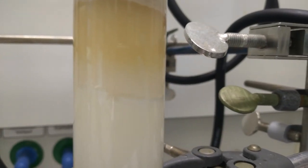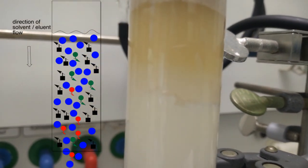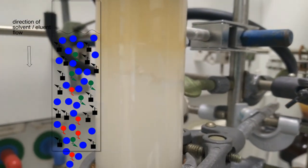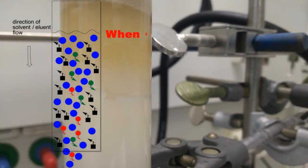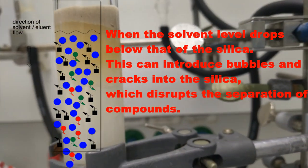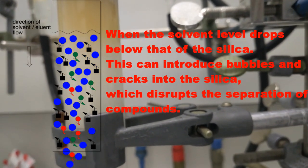Cracks and bubbles in packing of silica are a major cause of failure of column chromatography because they lead to mixing of fractions. This occurs when the solvent level drops below that of silica, or maybe because of reverse pressure.